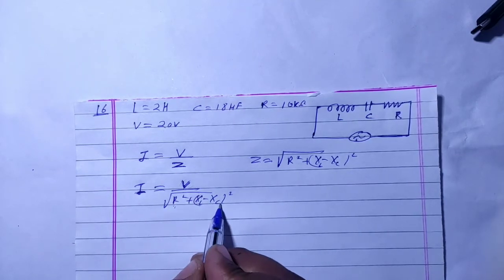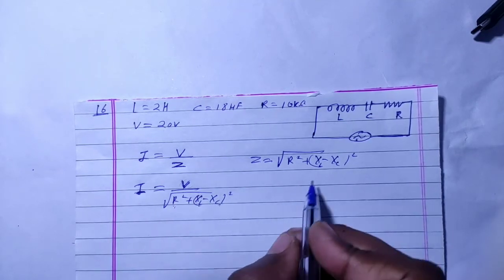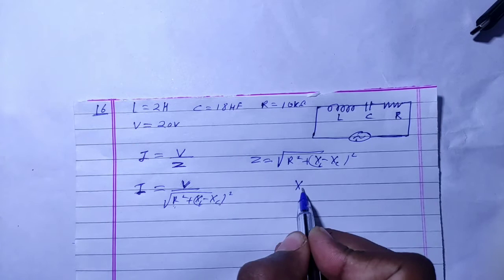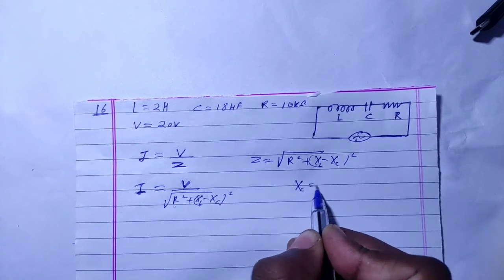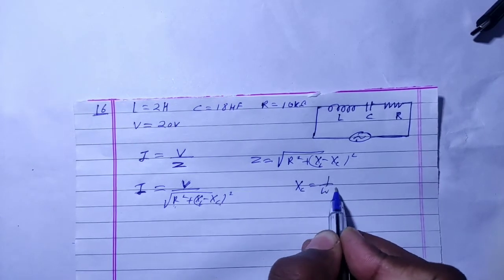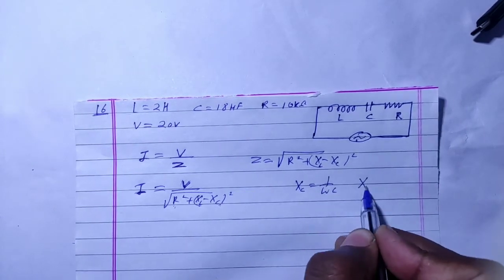XL minus XC — frequency dependent. XC equals 1 upon omega C, and XL equals omega L. So as we change the frequency, XL and XC change. For maximum current, the denominator should be minimum, which happens when XL equals XC, making the impedance equal to R alone.